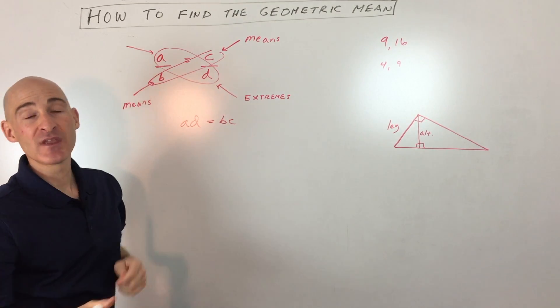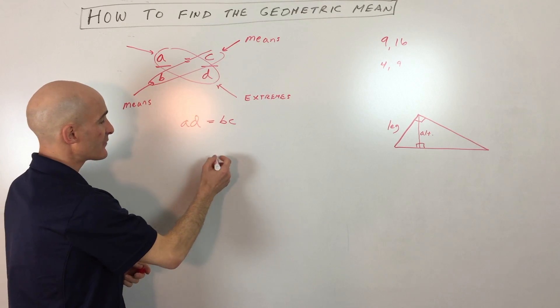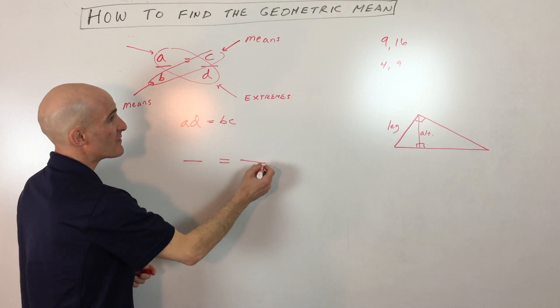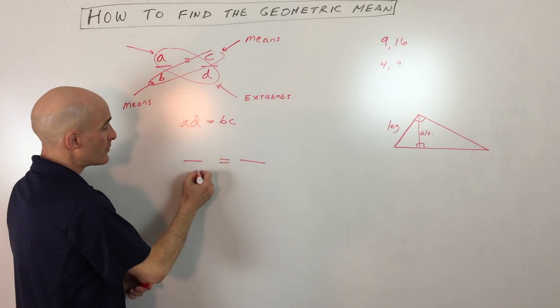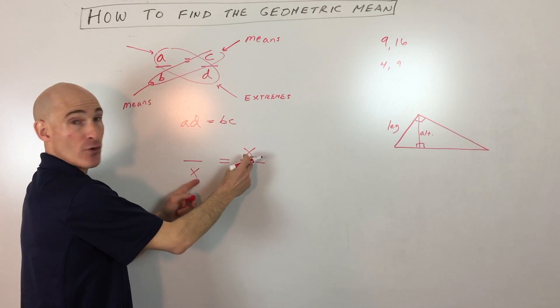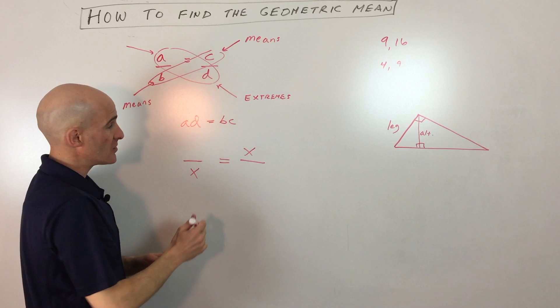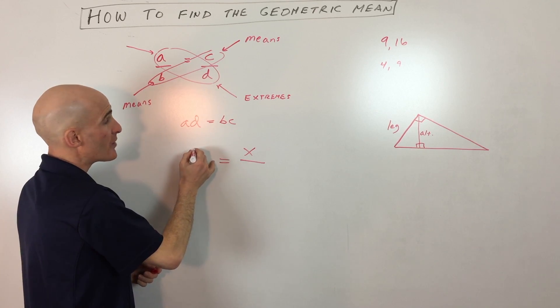So an example would be, like, say for example we set this up: we want to find the geometric mean of 9 and 16. We can put our variable X here in the mean position, okay, the means position, and then we're gonna put our 9 and 16 over here in the extremes position.